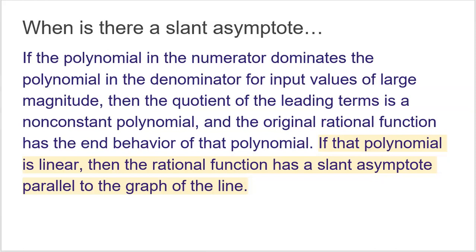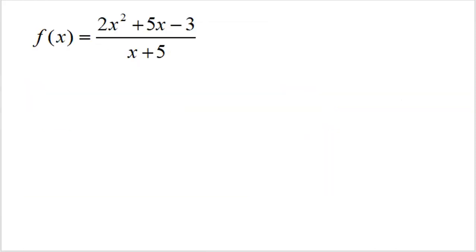To simplify: if the numerator's degree is bigger than the denominator's degree, you're going to have a slant asymptote. To find more information about it, divide your leading terms. If that division yields a linear polynomial, the slant asymptote is parallel to it — and since parallel lines have the same slope, you already know the slope of your slant asymptote.